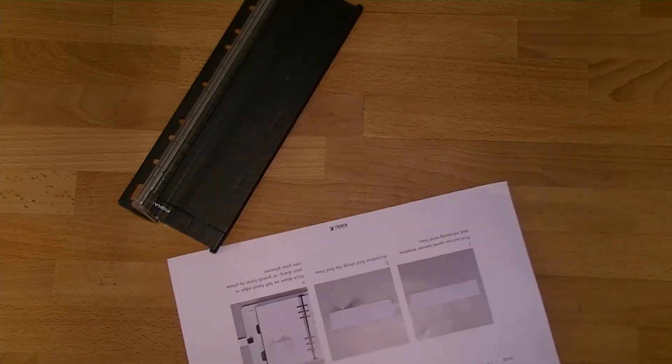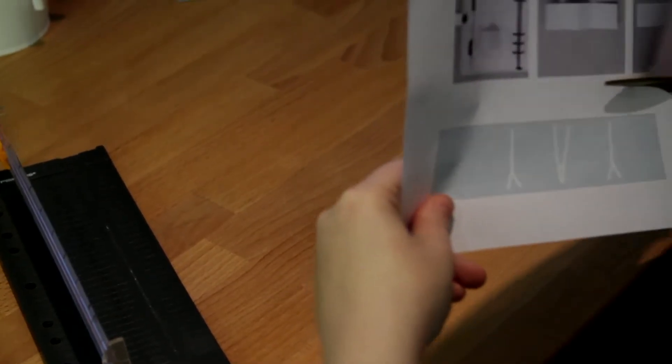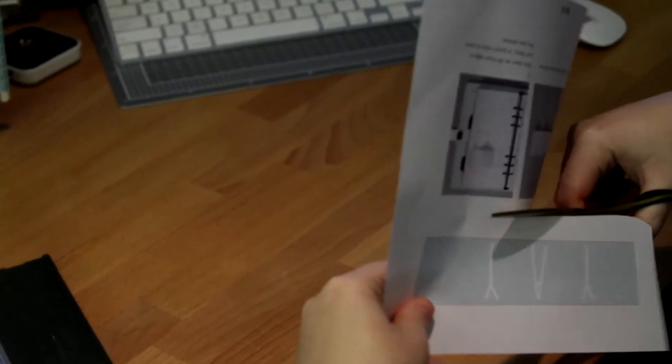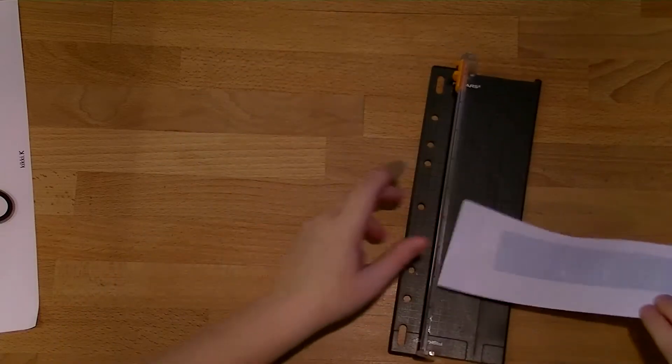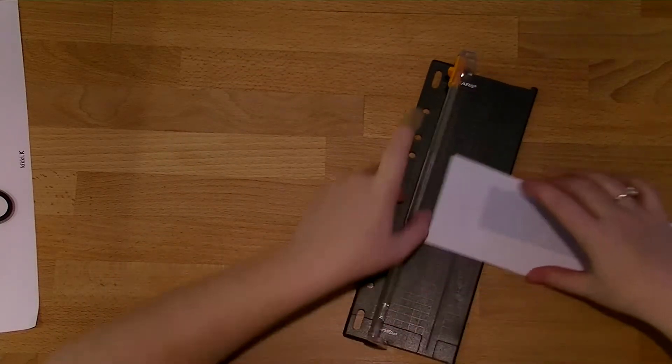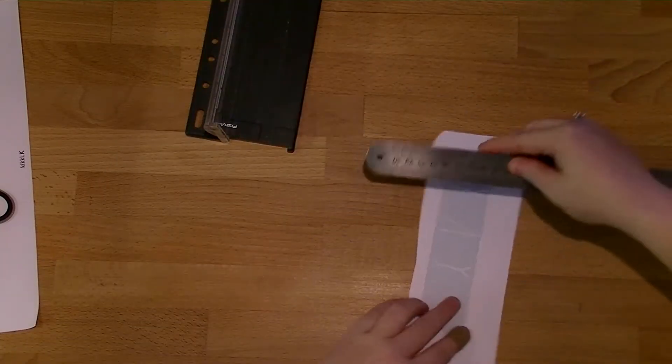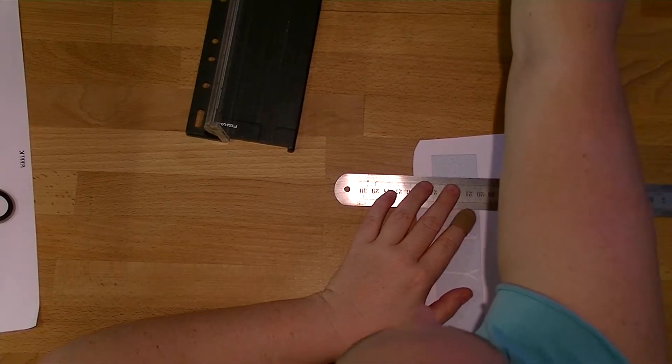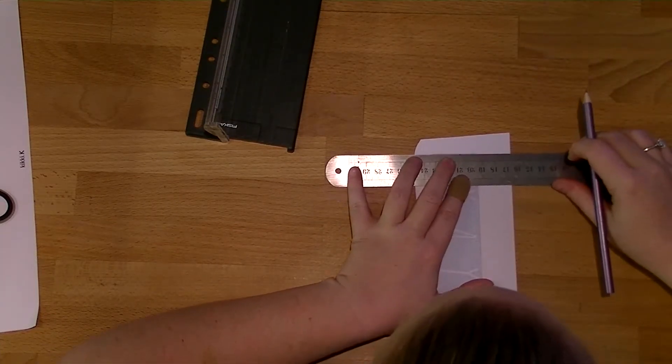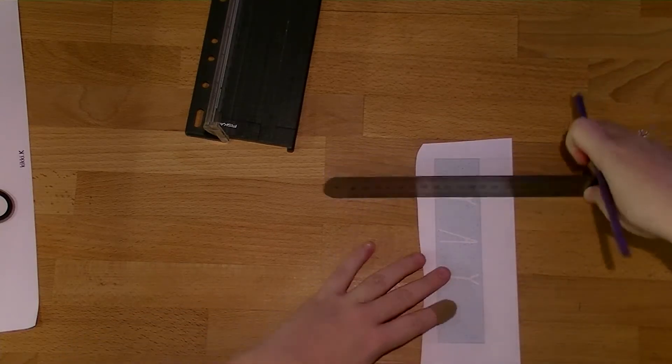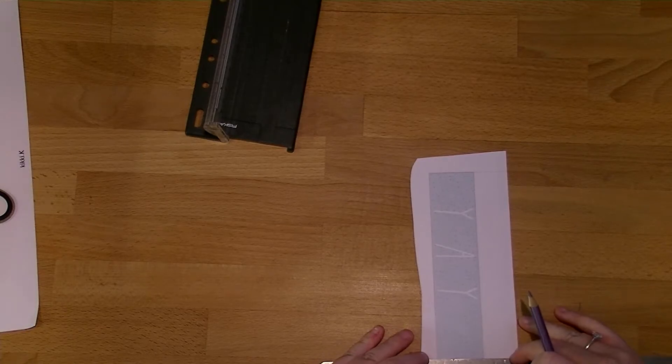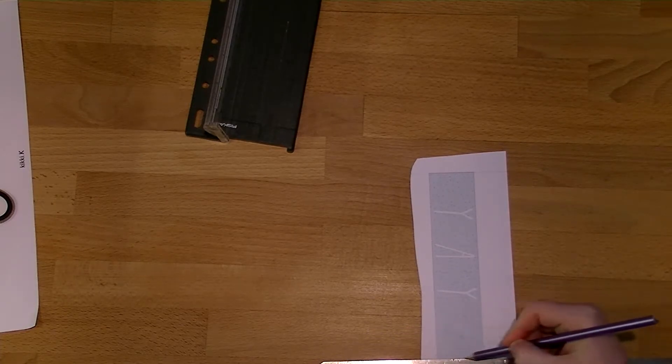I'm just going to cut it the easy way first. So I'm going to cut this out with my paper trimmer just because I do want it to be straight. And because of that, I'm just going to extend the lines right to the edge of the page, just so it's a little bit easier to line up the trimmer.